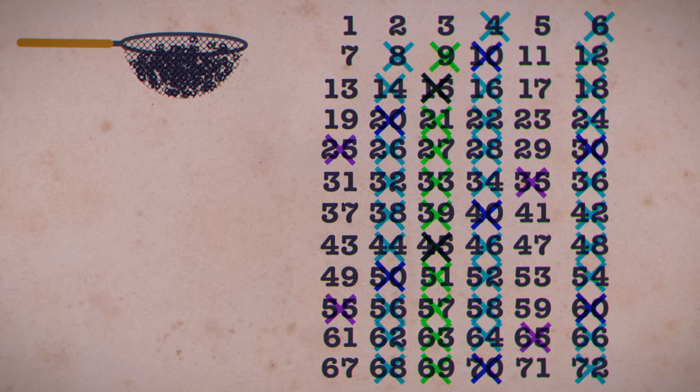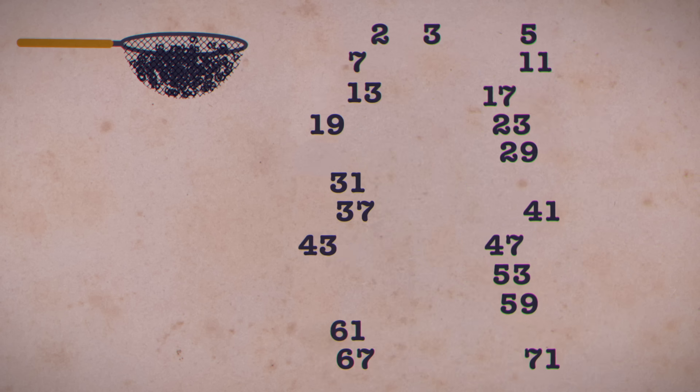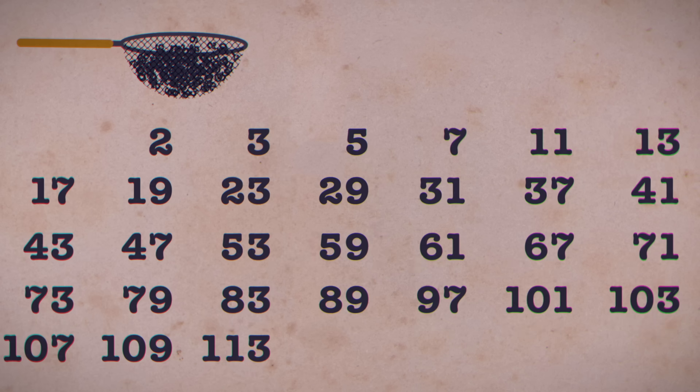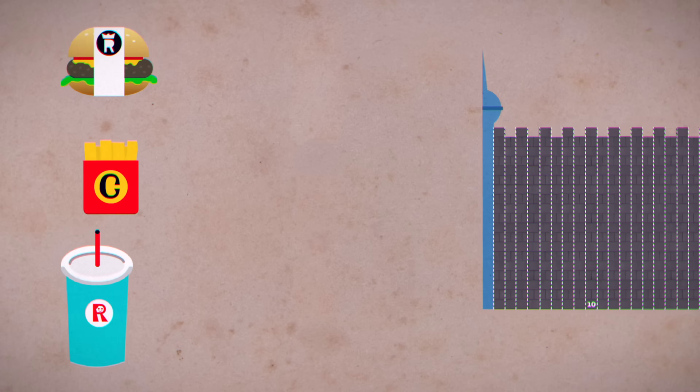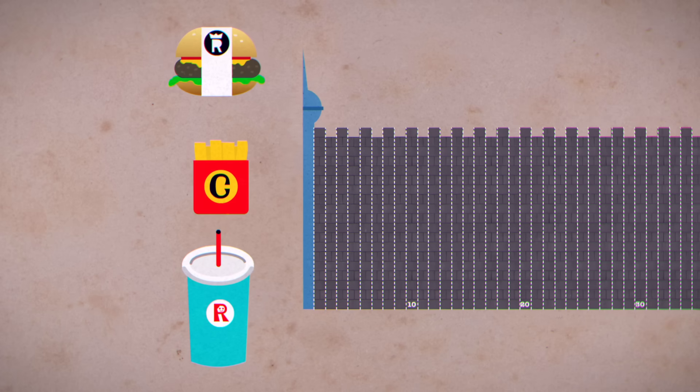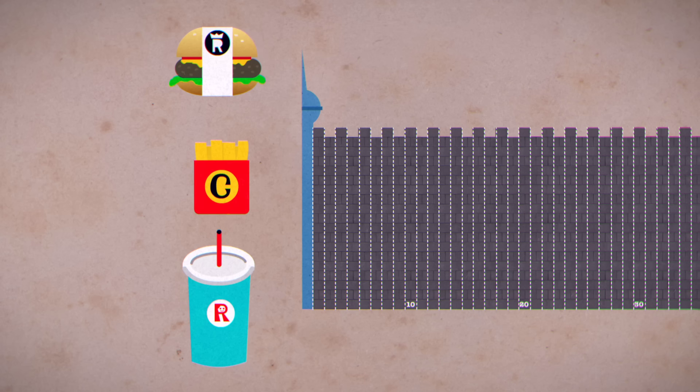This method eliminates all possible composite numbers, leaving only primes behind. We've already identified every prime less than 121, and it's easy to go higher and higher this way. We can use a similar technique with our wall problem to eliminate entire groups of numbers at once.